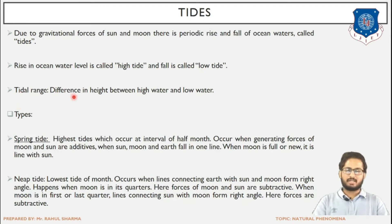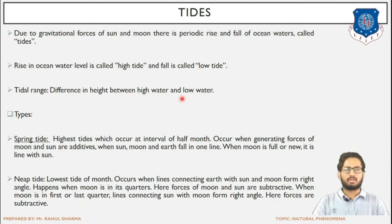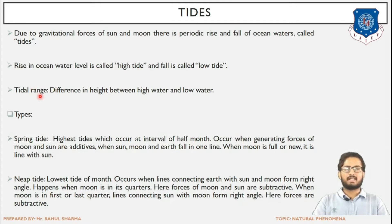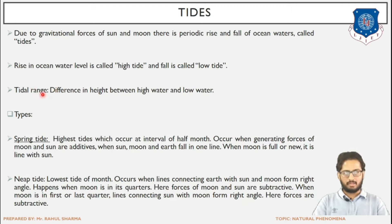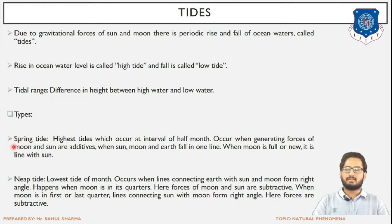Tidal range is the difference between the high water level and the low water level. The tidal range is always between two points — the lowest point, that is the low water level, and the highest point, that is the high water level. The types of tides are spring tide and neap tide.